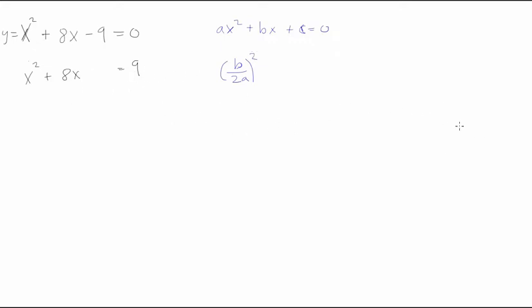So let's put plus, well, what's b? b would be the 8. And 2 times a is, the a would be 1, so it's just divided by 2, and we'll square that. And we'll do the same on this side. We'll have plus 8 over 2 squared.